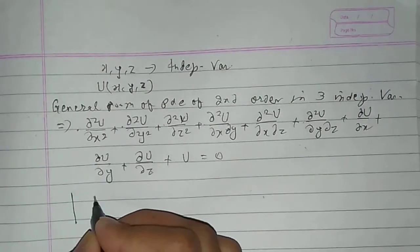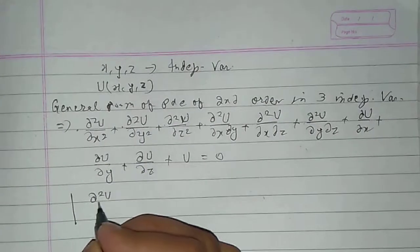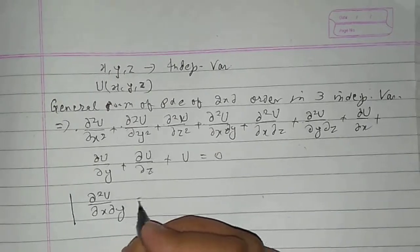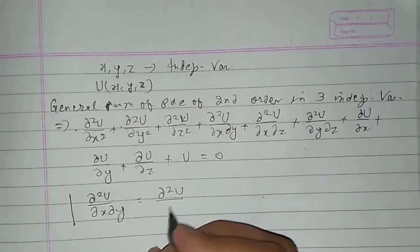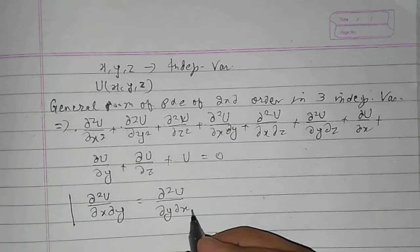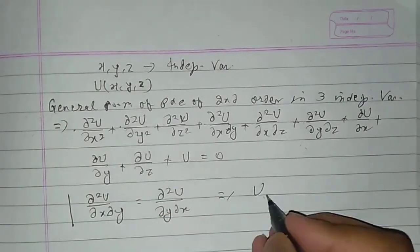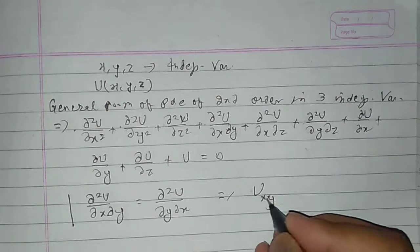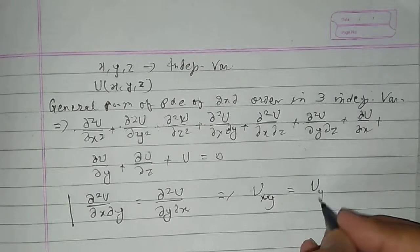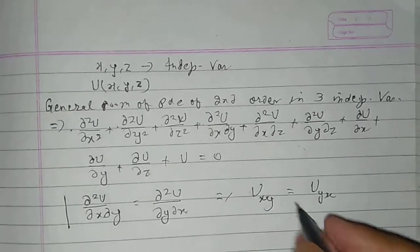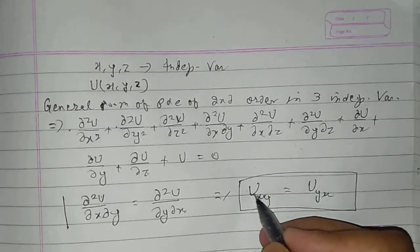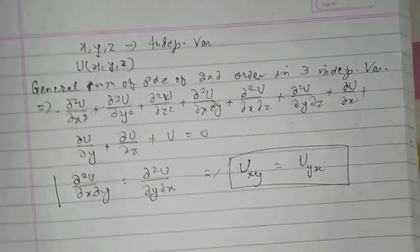We know that del²u/dx dy is equal to del²u/dy dx, that means u_xy equals u_yx. This symmetry property of mixed partial derivatives is a fact we will use now in the classification method.